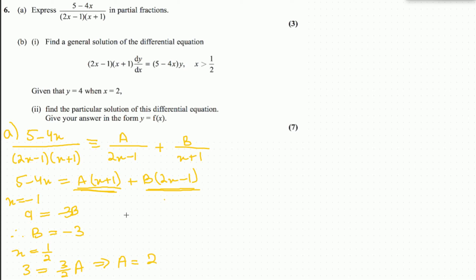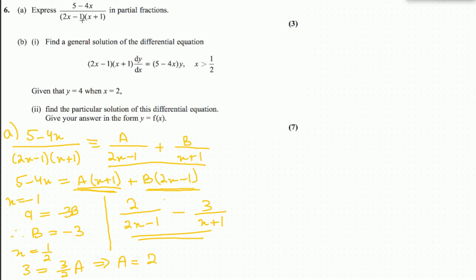Substituting the values of a and b gives us 2 over 2x minus 1 minus 3 over x plus 1. That's the expression written in partial fractions.